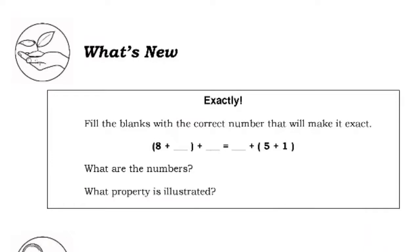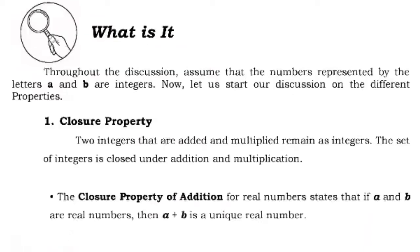What's new? Fill the blanks with the correct number that will make it exact: the quantity of 8 plus blank plus blank equals blank plus the quantity of 5 plus 1. What are the numbers? What property is illustrated? We're going to discuss this one later. Throughout the discussion, assume that the numbers represented by the letters A and B are integers. Now let us start our discussion on the different properties.